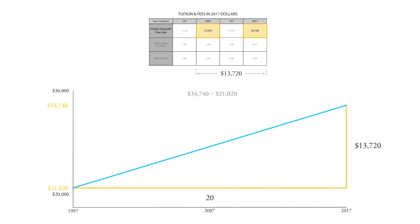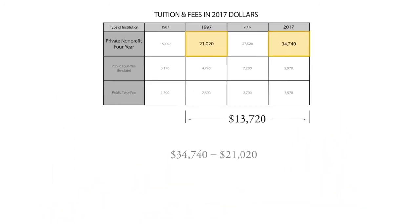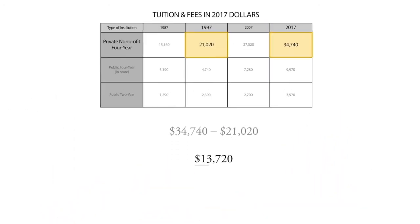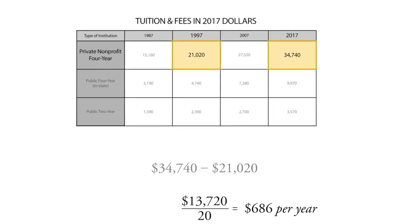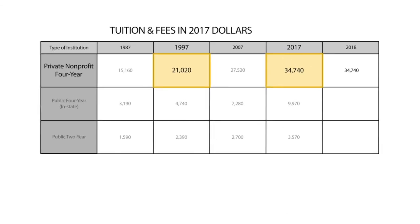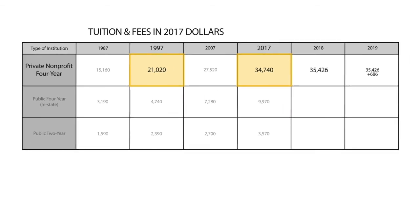But the question asks how much it goes up per year. Anytime you see 'per,' you know you're going to divide. So we take $13,720 and divide by 20 years — that's 2017 minus 1997 — and we get an average annual increase of $686 per year. So you'd better hurry up and go to college, because the next year it's going to be $686 more, and the year after that, maybe another $686 more.